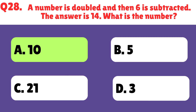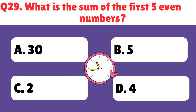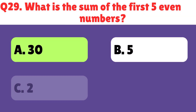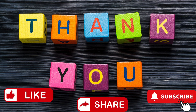What is the sum of the first 5 even numbers? The right answer is 30. This is it for today. If you like the video, don't forget to like and subscribe.